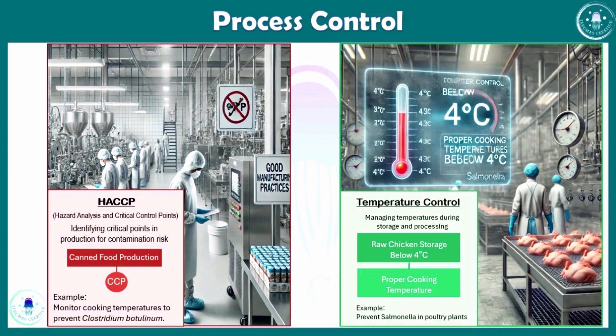Another aspect of process control is temperature control — managing temperatures during storage and processing to prevent bacterial growth. For example, poultry plants store raw chicken below 4 degrees Celsius and ensure proper cooking to prevent Salmonella. This is how the whole process of food production is controlled.